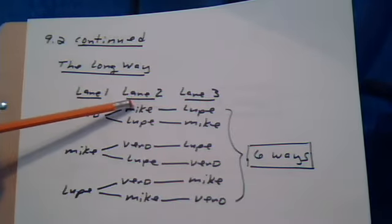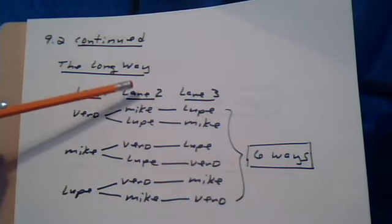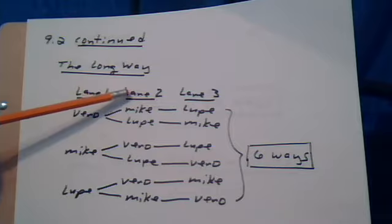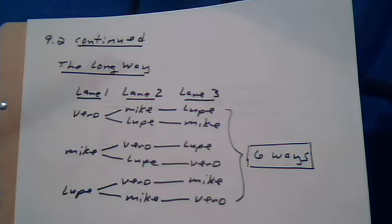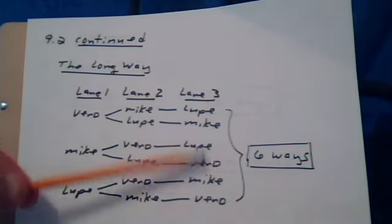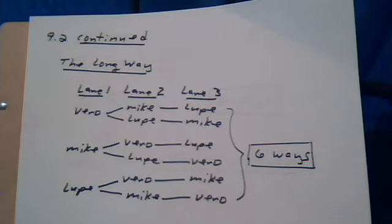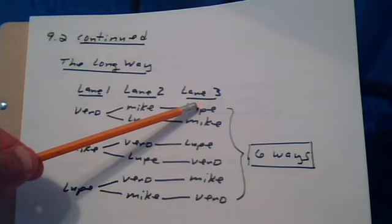Lane two, you only have two people available since one of them has already been assigned to lane one. So for step two, assigning lane two, you have only two people available. And for lane three, by then you've assigned lane one and lane two to two people. You only have one person available.